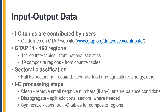Input-output tables are contributed to GTAP by users. If you're interested in contributing data, please visit the GTAP website for further details. Of GTAP 11's 160 regions, 141 are individual countries, meaning that for each individual country there is an input-output table based on national statistics, adjusted based on GTAP guidelines. The other 19 composite regions rely on composite input-output tables constructed based on the linear combination of proxy input-output tables of selected individual countries.